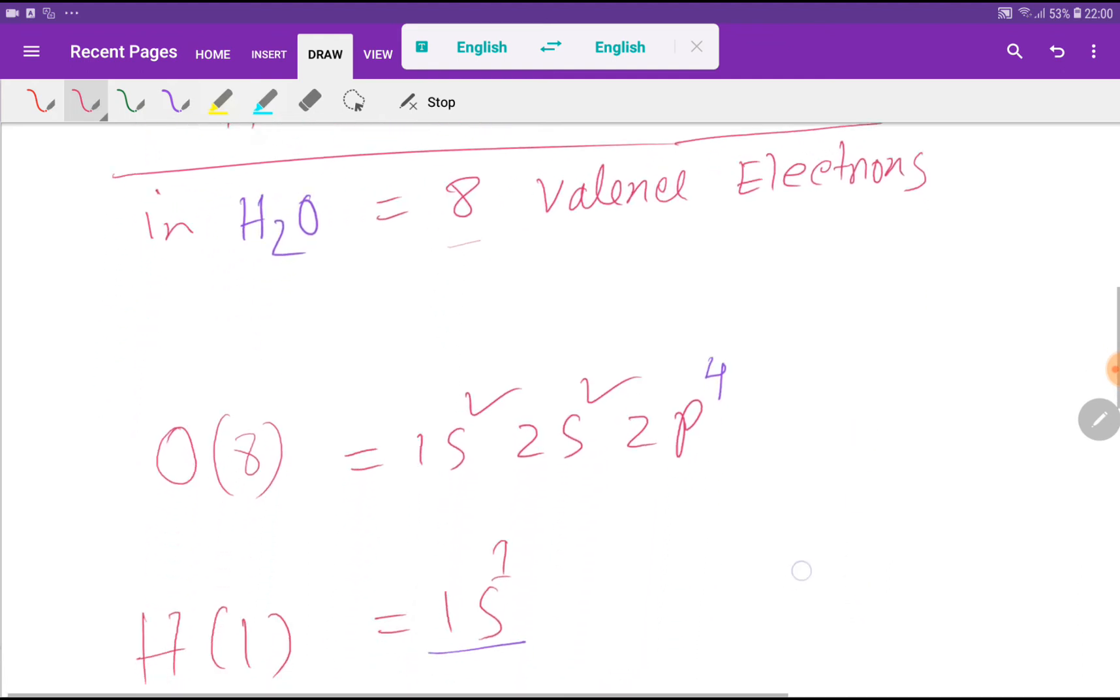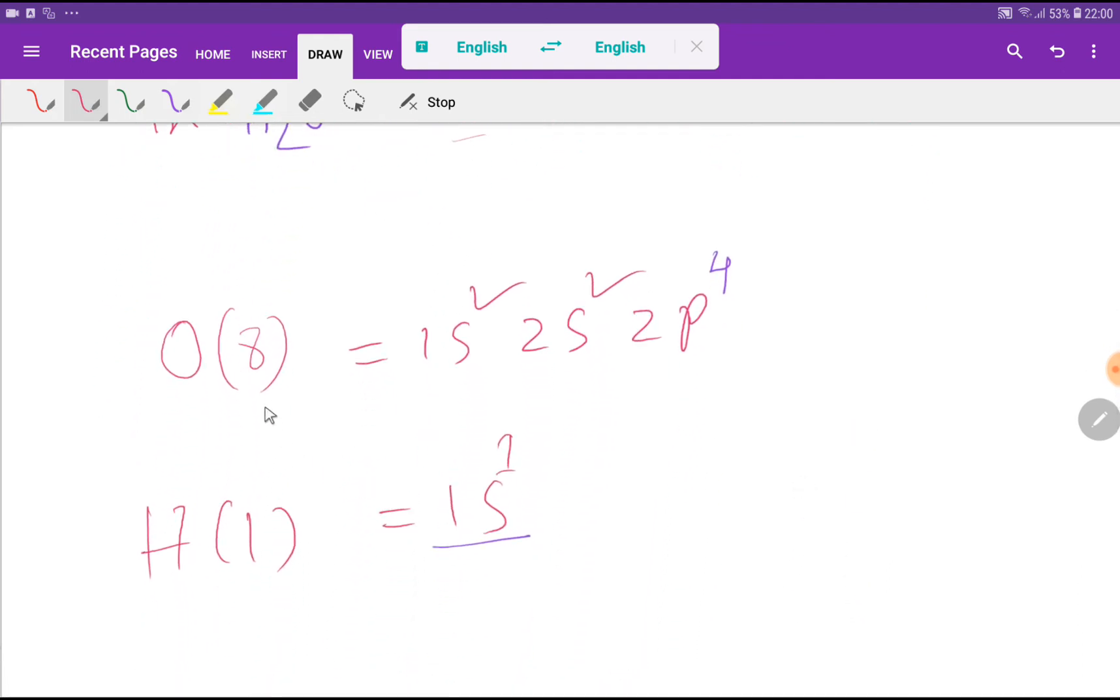Here is another way to find out the valence electrons for oxygen and hydrogen, and then water. The atomic number of oxygen is eight, so if you do the electronic configuration, you will get this.